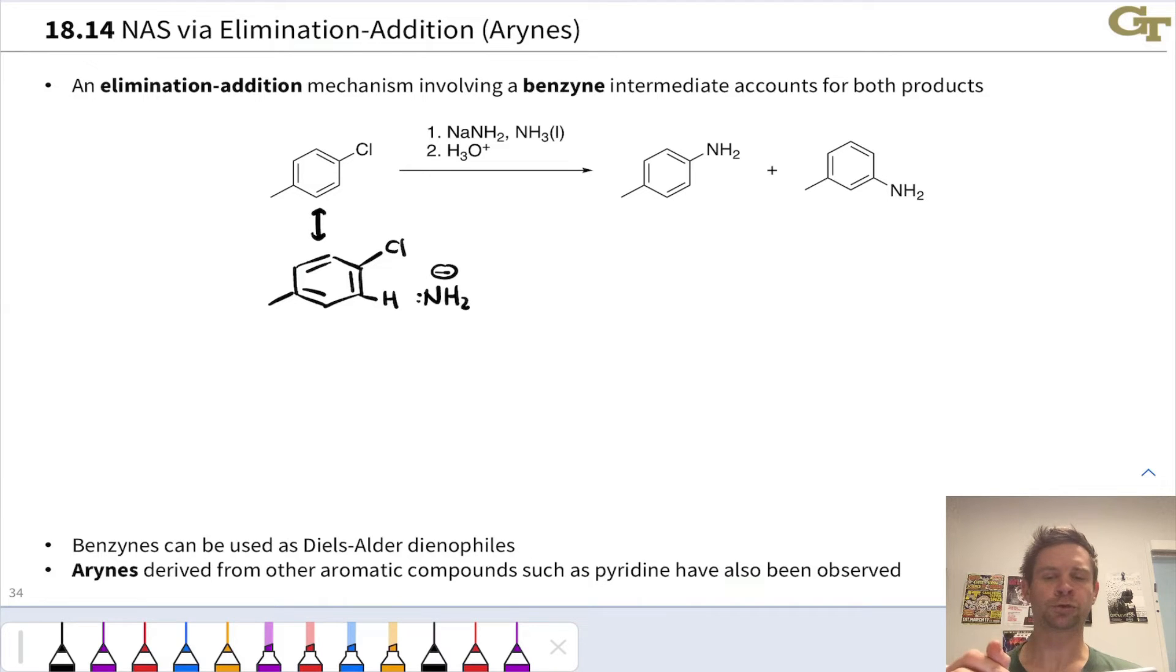First of all, I just want to draw an alternative resonance form of this structure that puts a double bond here for reasons of convenience we'll see later. This is going to lead to a resonance form of the key reactive benzyne intermediate that we'll encounter here in a second that is sensible looking, relatively sensible looking. What's going on here?